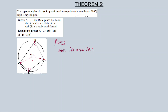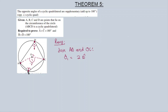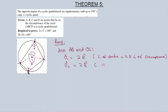Angle O1 is equal to two times angle D. Angle O1 equals two times angle D — and the reason is: the angle at the center is equal to two times the angle at the circumference, subtended by the same arc. Similarly, angle O2 is equal to two times angle B, for the same reason: angle at center equals two times angle at circumference.